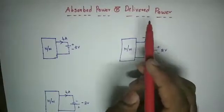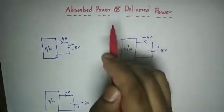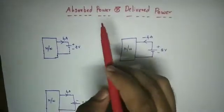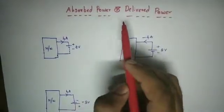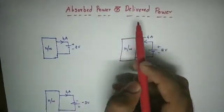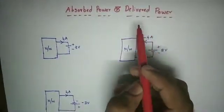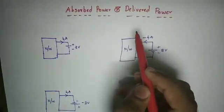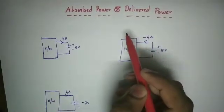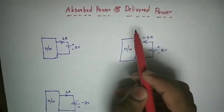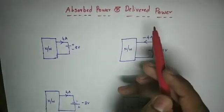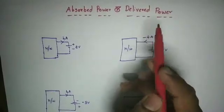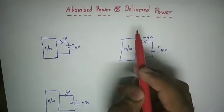After that, we will find Tellegen's theorem. This is the last topic of Basic Concepts of Networks. In the next lectures, we will talk about problems from previous year exams.